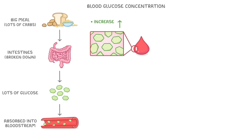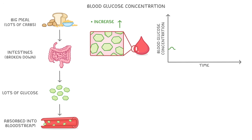We can see this if we plot it on a graph that measures how blood glucose concentration changes with time. Before the meal, the level of glucose fluctuates slightly but stays around this normal level. Once we eat the carbohydrates though, we see this spike as the glucose is absorbed into the blood.